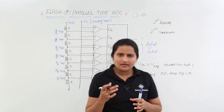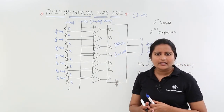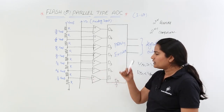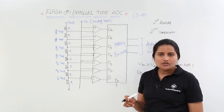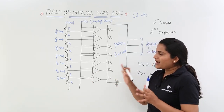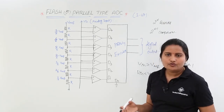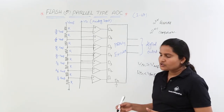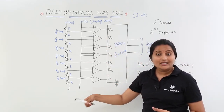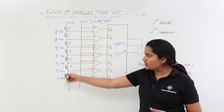The exact internal operation of the priority encoder — which uses XOR gates and diodes — is a very complex circuit, so it is generally not asked in exams. What is asked is: how many comparators are required for a flash type ADC? The answer is 2^n minus 1 comparators. And how many resistors? That is 2^n resistors.